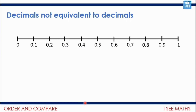Now, the first thing: decimals are not equivalent to other decimals. That might sound odd. For example, 0.37 and 0.5 — they're not equivalent to other decimals. You could say 0.5 is the same as 0.50, a bit like saying 50 is the same as 50.0. But decimals are not equivalent to other decimals. 0.37 is 0.37, and if you have a bit more, you have a different decimal.